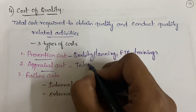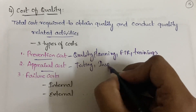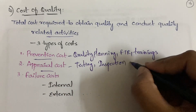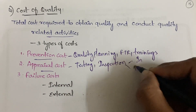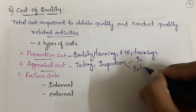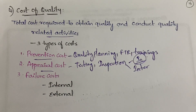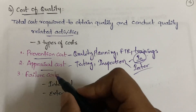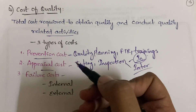Next is appraisal cost. Under appraisal cost you have testing and inspection — specifically in-process inspection, which occurs within a process, and inter-process inspection, which occurs between two processes.